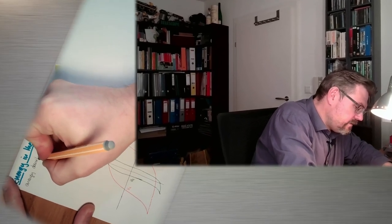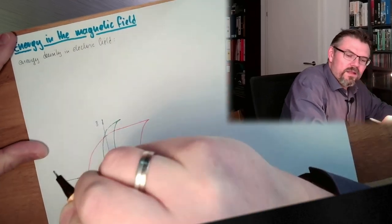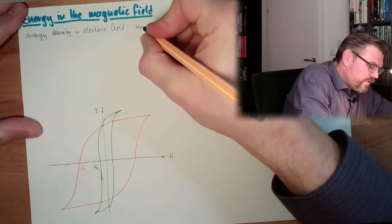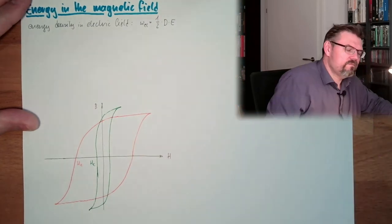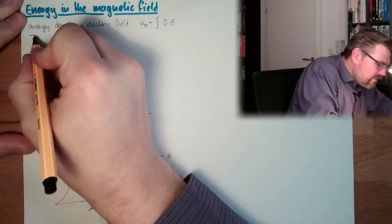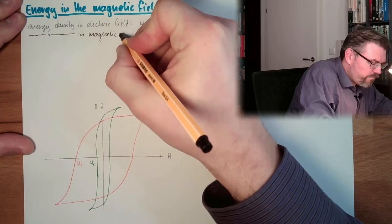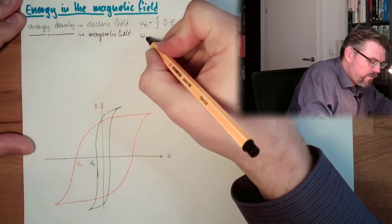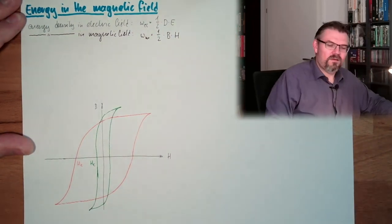So what was the energy density in the electric field? Energy density in electric field. This was W electrical equals one half the flux density multiplied by the field strength. And now guess what? What is the energy density in the magnetic field? WM is one half flux density field strength.